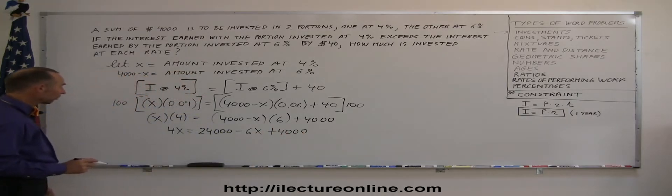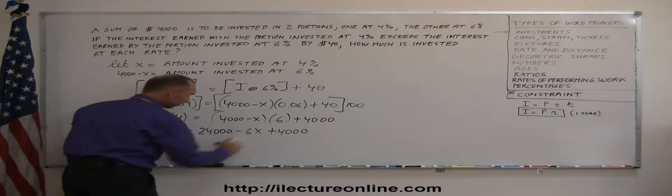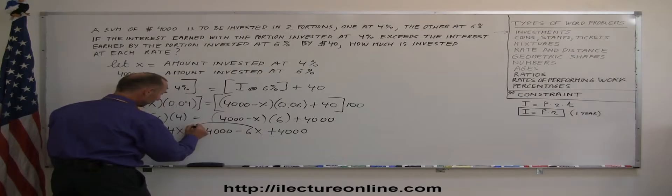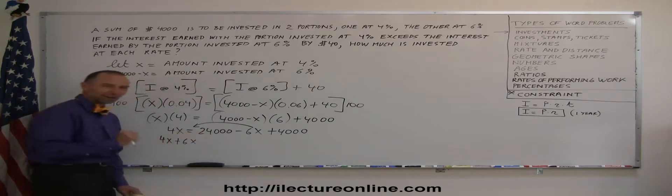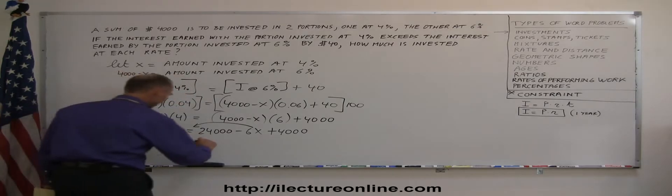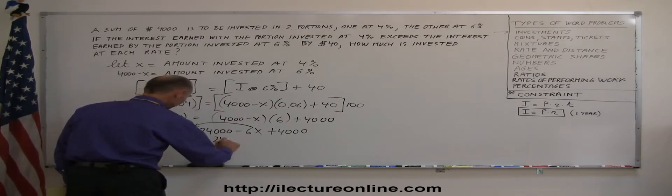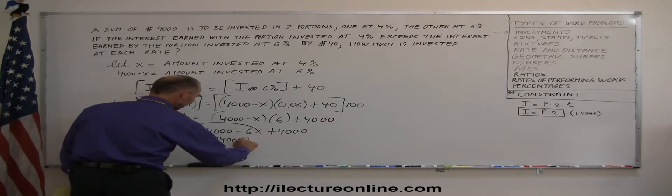The next step is to move all the terms with an x to the left side. Everything else stays on the right side, so this minus 6x goes over here to the other side, so it becomes 4x plus 6x. Remember, whenever you cross the equal sign, you want to change that sign, and on the right side, we have 24,000 and plus another 4,000.